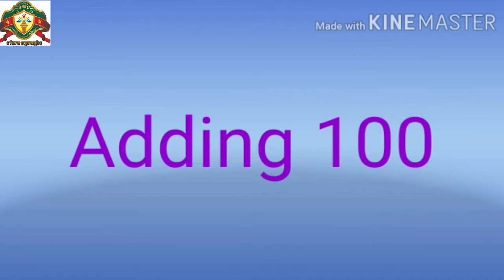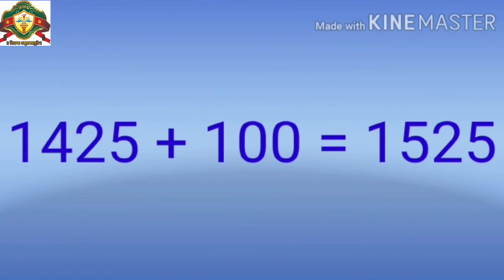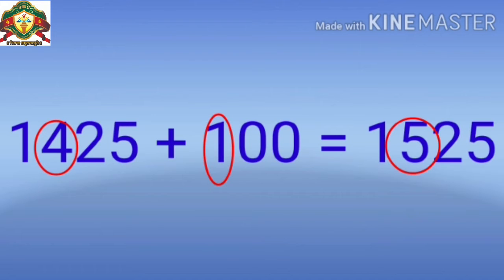And when we are adding 100 to any number — look at this example, here is 1425 plus 100. So आपने 100 plus करना है, then the value of digit at the 100th place increases by 1. यानि कि जो 100th place की value है, वो increase हो जाएगी।